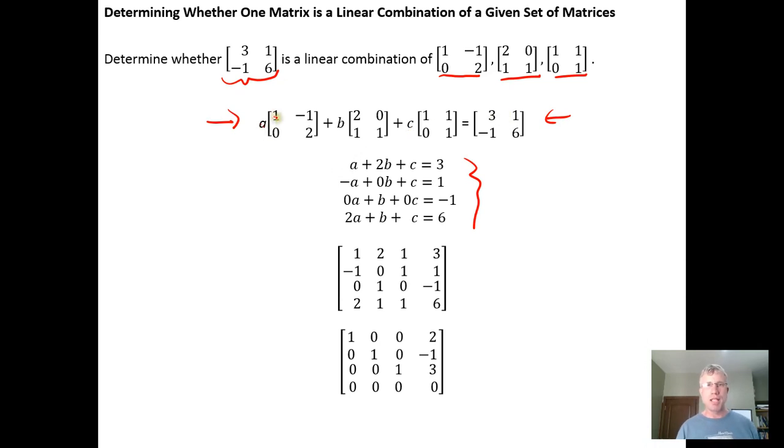That means A times 1 plus B times 2 plus C times 1 has to equal 3, right? The sum of the row 1, column 1 components has to add up to the row 1, column 1 component here. And we can just step through and do that for each of the four entries.